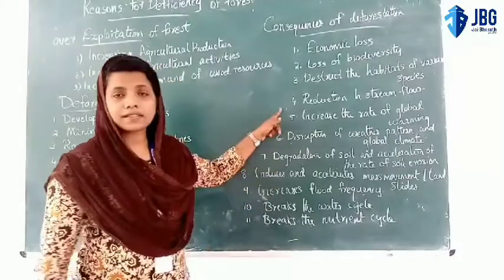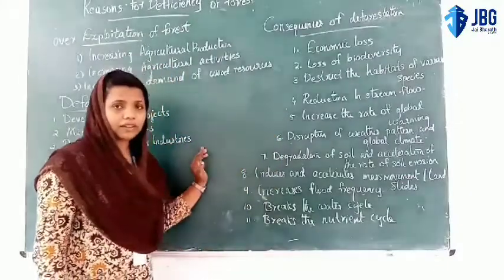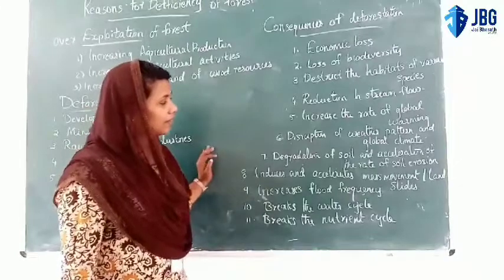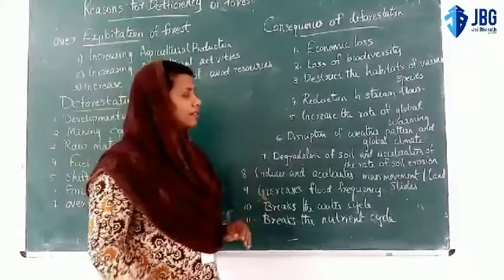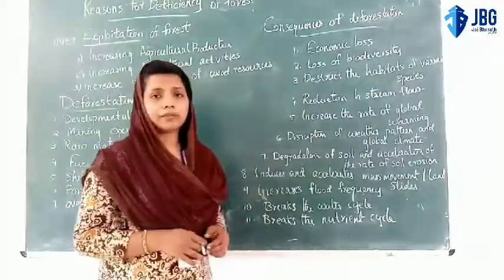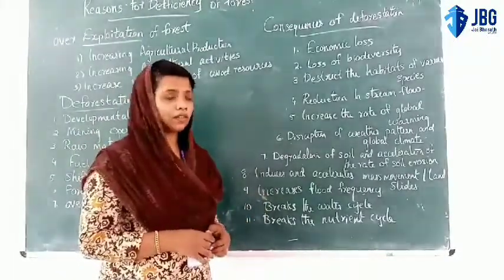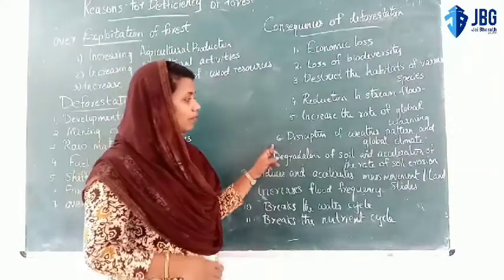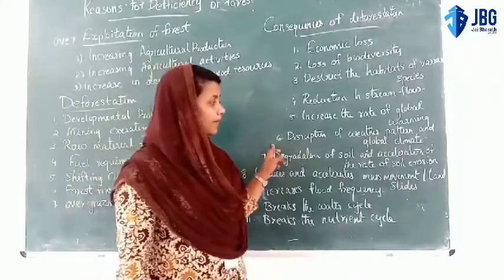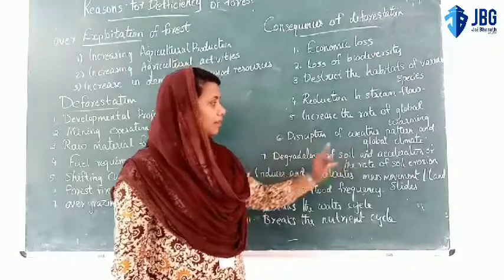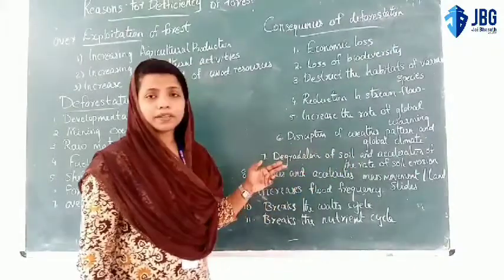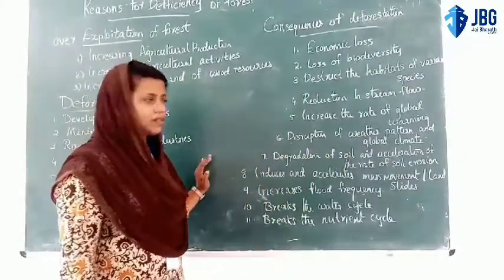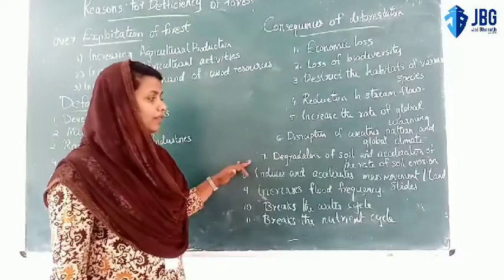Fourth consequence is reduction in stream flow — stream flow is reduced. Fifth is increase in the rate of global warming — global warming is increasing. Sixth is disruption of weather patterns and global climate change.